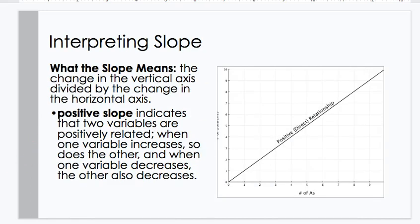Interpreting the slope. What the slope means? The change in the vertical axis divided by the change in the horizontal axis. A positive slope indicates that two variables are positively related. When one variable increases, so does the other. And vice versa. When one variable decreases, the other also decreases.